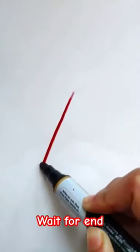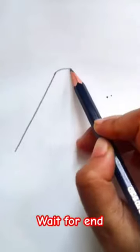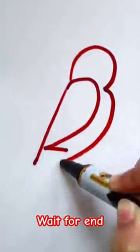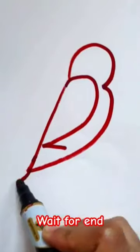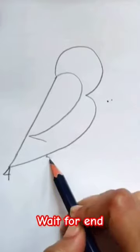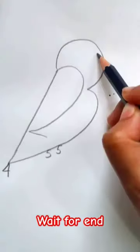First write a 1. Then a 2. Then a 3. Then a 4. Then 2 5's. Then a 6 and 7. The bird is finished.